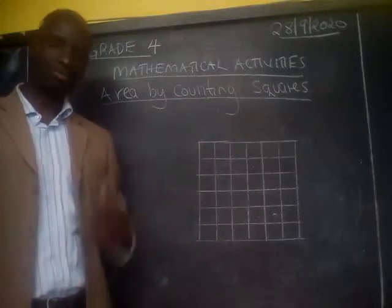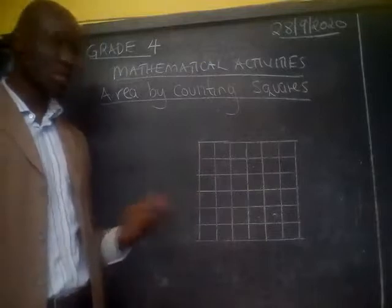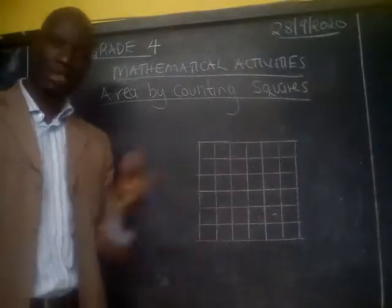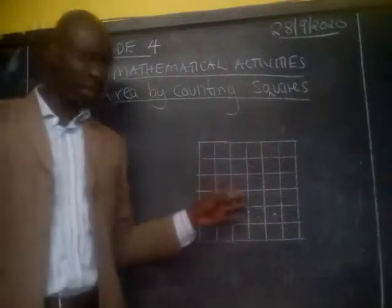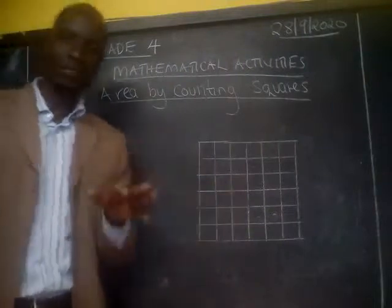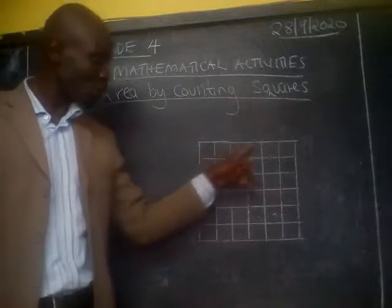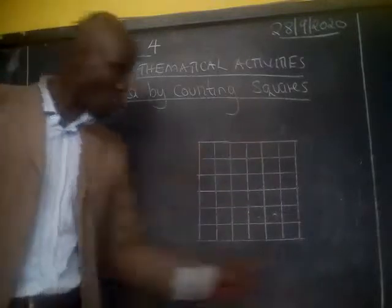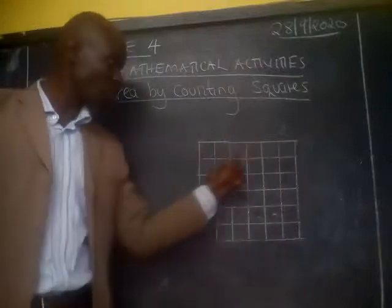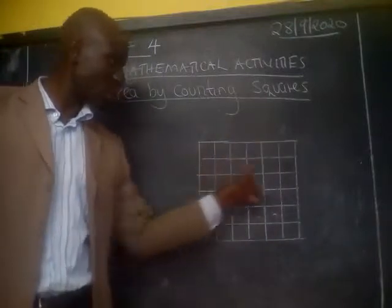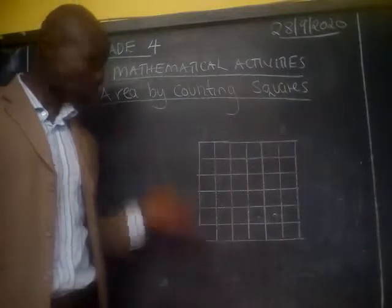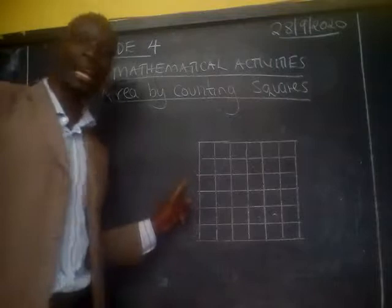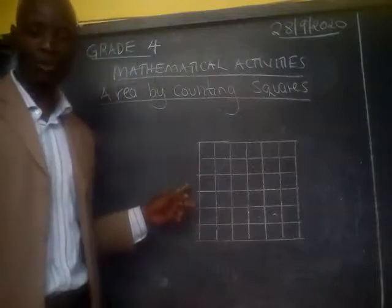Basically, what we said earlier is that we're dealing with measurements in terms of centimeters or meters. Today we have our square here. When you look at our square, we want to identify that every small square here has equal size. Therefore, we have one big square and we have other small squares inside. For us to get the area of this square, we have to do it by calculation.